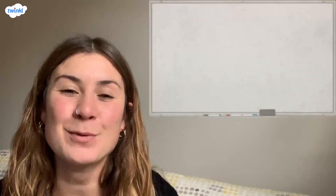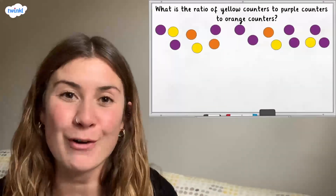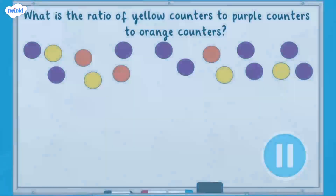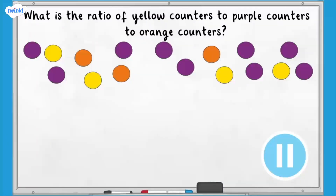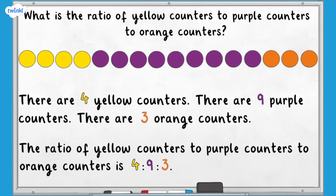Some yellow counters have been added to the group. What is the ratio of yellow to purple to orange counters now? The ratio of yellow to purple to orange counters is four to nine to three. Four, nine, and three don't share any factors except one, so we can't divide them all by the same number. Therefore, we can't simplify this ratio any further.